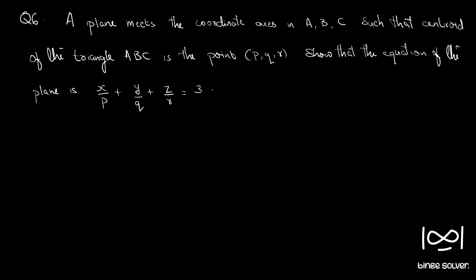Question 6. A plane meets the coordinate axes in A, B, C such that the centroid of the triangle ABC is the point (p, q, r). Show that the equation of the plane is x/p + y/q + z/r = 3. It is given that the plane meets the coordinate axes in points A, B, and C.